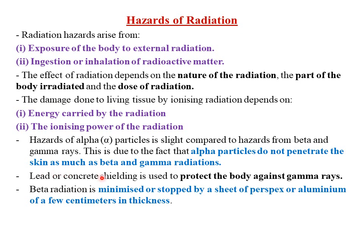Lead or concrete shielding is used to protect the body against gamma rays. We said that gamma rays are stopped by either lead or concrete. Then beta radiation is minimized or stopped by a sheet of perspex or aluminum of few centimeters in thickness.